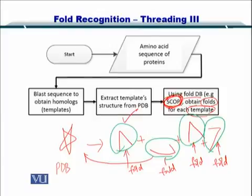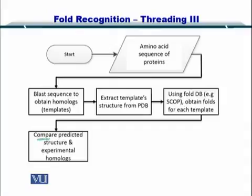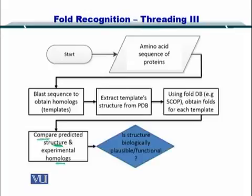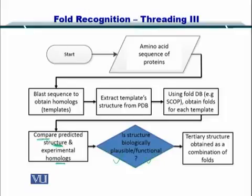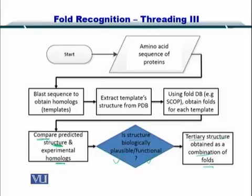What we do with these folds is compare the predicted structures — that is, the folds — with the experimental homologs. If the structure is functional and plausible, you create a tertiary structure by combining these folds. You can select one fold from one PDB, another fold from some other PDB, yet another fold from a different PDB, and combine them to predict the structure for the sequence you are looking for.